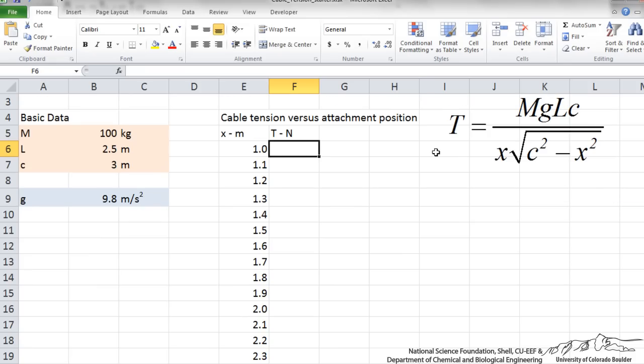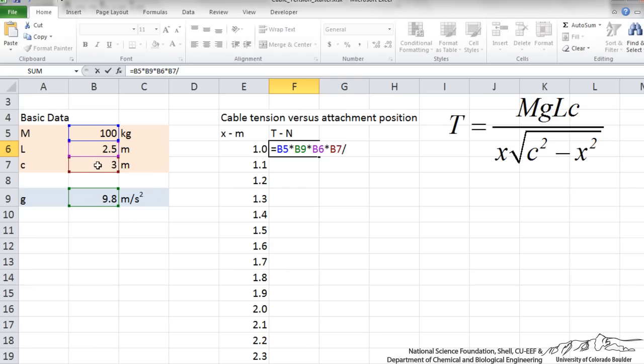Now I am going to put in a formula for the tension as a function of the attachment position. All Excel formulas start with equal, so our tension is going to equal mass, so I can click here for mass and I am going to multiply by gravity times L. So I point into that cell B6 and I click. It goes into our formula times C. Now we are dividing by, I am going to put a parenthesis here so that we maintain the order of operation, x. So x in this case is what we are varying. That is our independent variable, so I click on cell E6 times square root. And you see in Excel we have built-in functions, so square root is already in there.